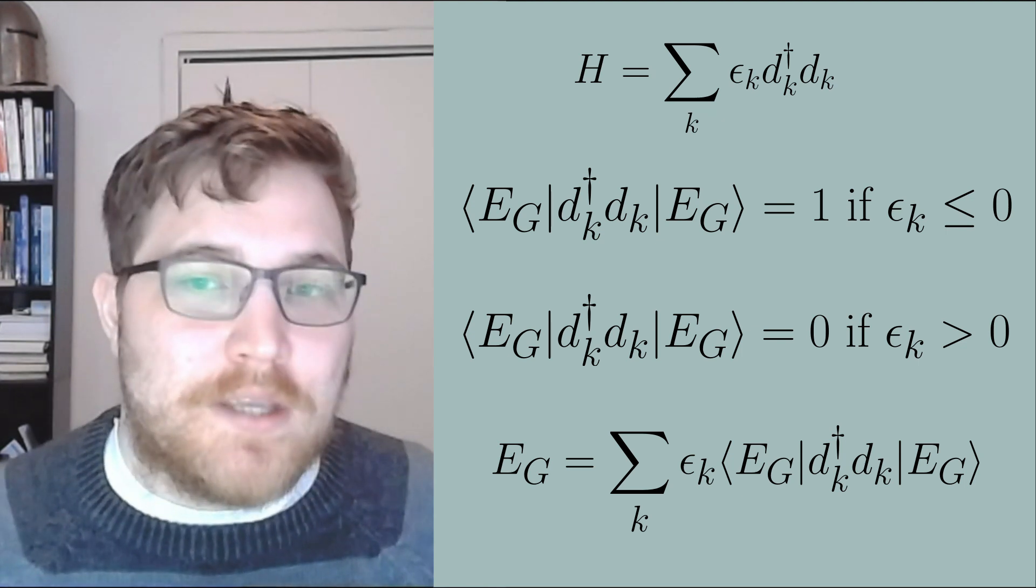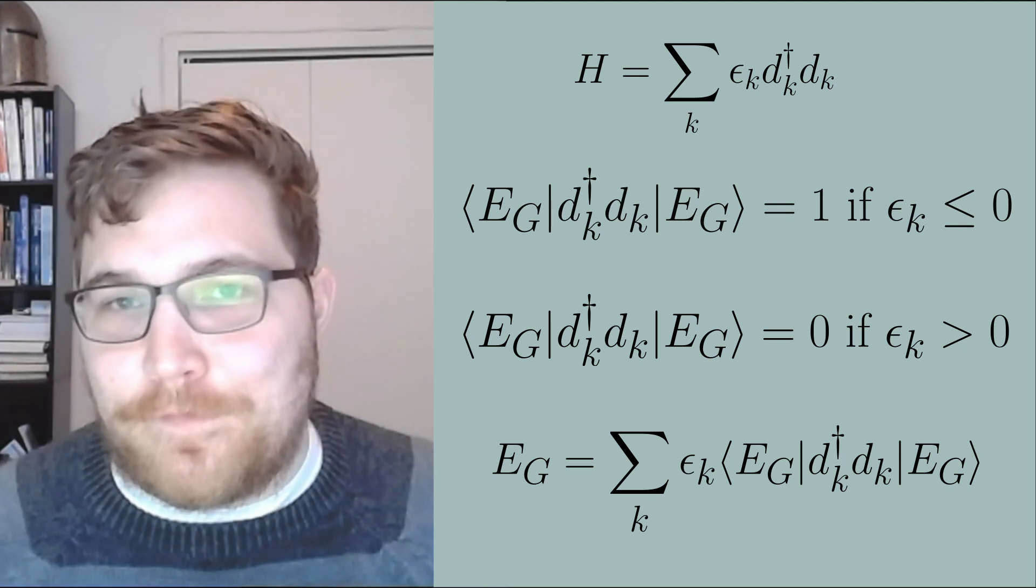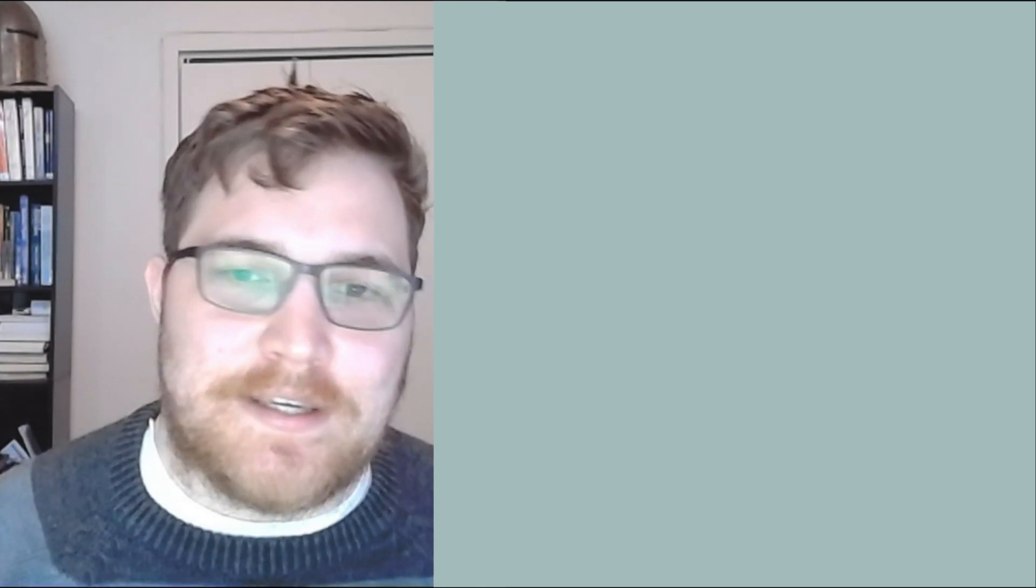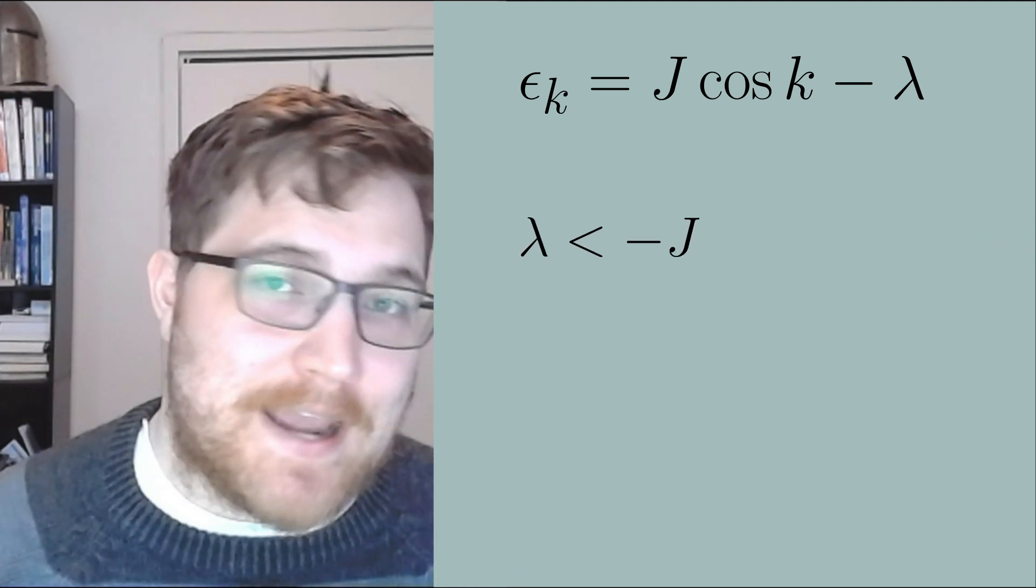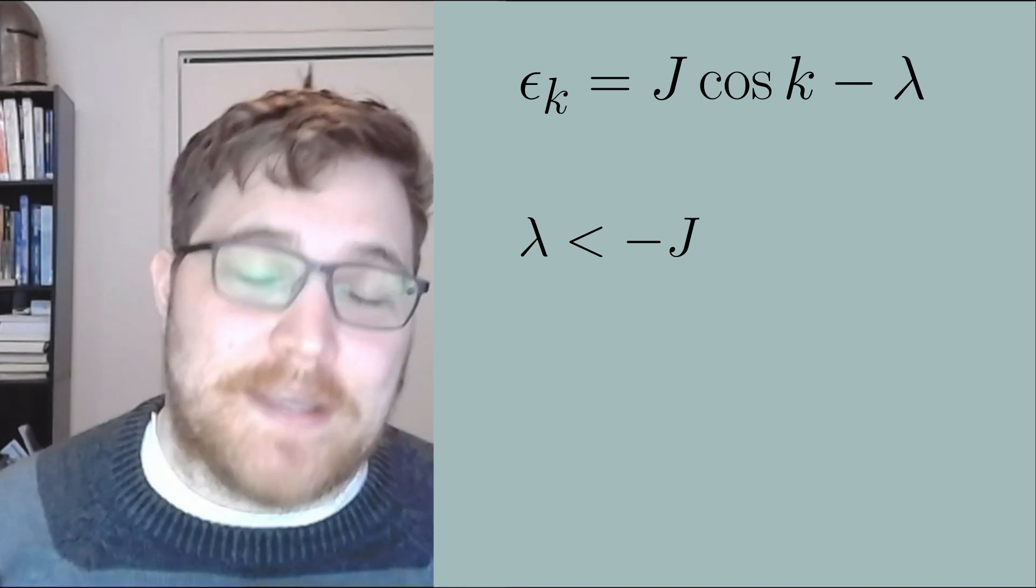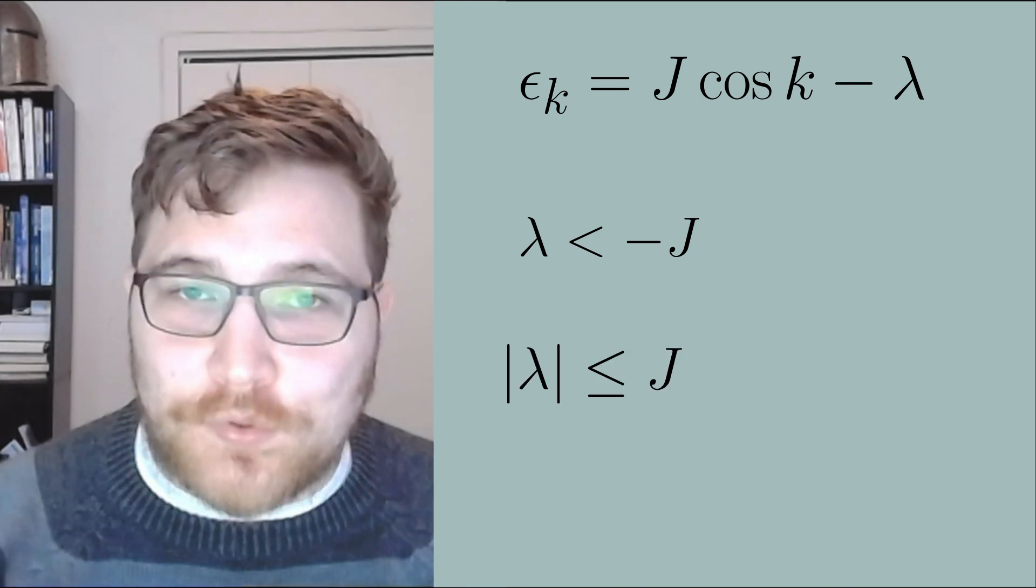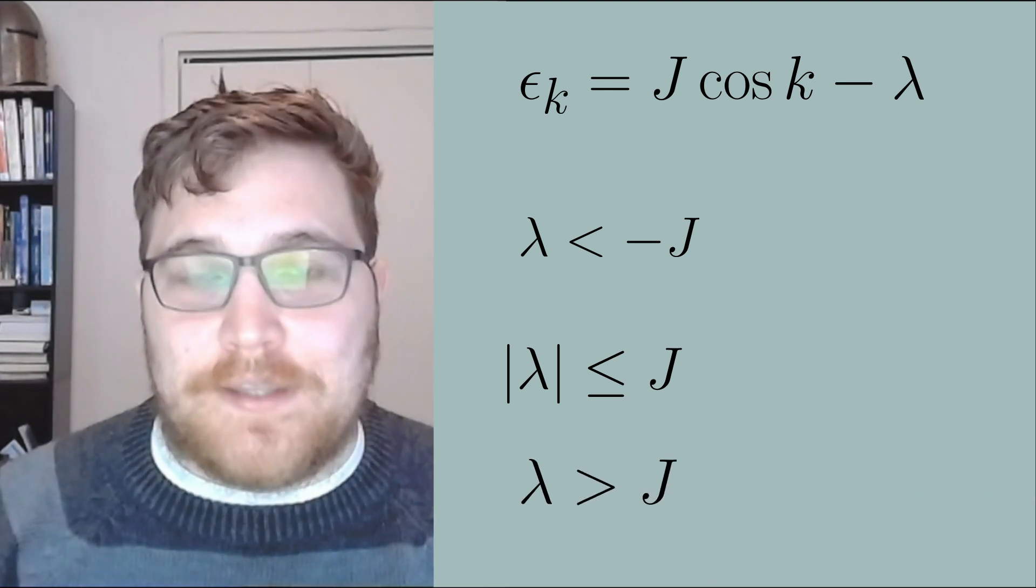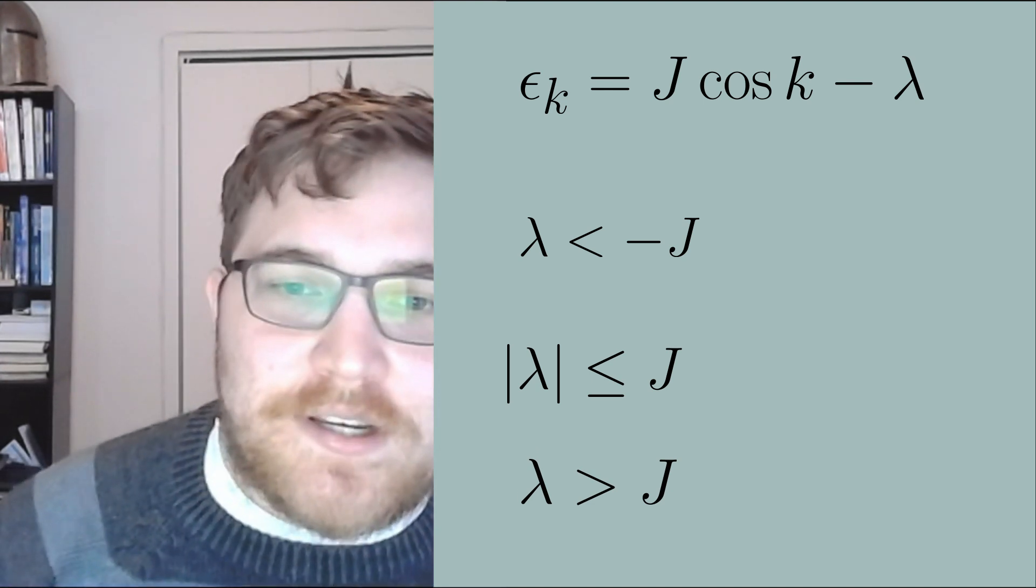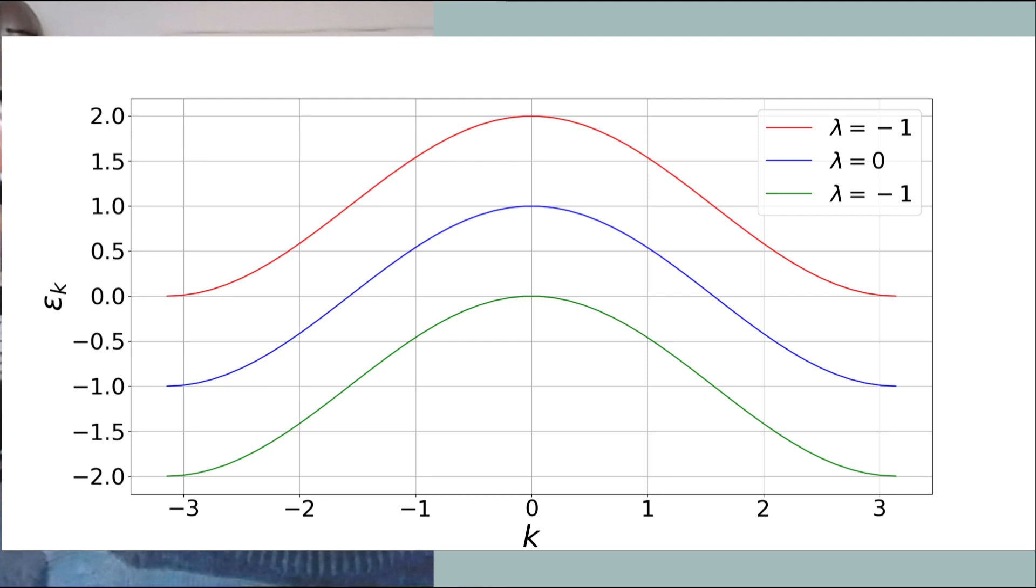This momenta is commonly referred to as the Fermi momentum. We need to look at the following cases: when the magnetic field is less than the negative of the coupling energy j, when the absolute value of lambda is less than or equal to the coupling energy j, and when lambda is greater than the coupling energy j. You can see examples of this in the following plot where I've set the coupling energy j equal to one. From this plot you see that the energy eigenmodes that contribute to our ground state are always below zero.